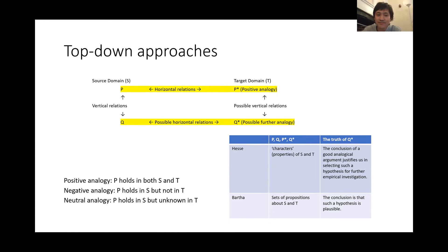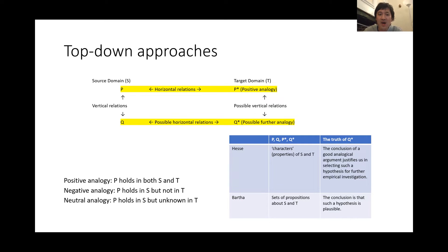There are three important conceptions about analogy that originated from Hesse's work: positive analogy, negative analogy, and neutral analogy. Positive analogy means there are some similarities between two domains S and T — for example, property P holds in both S and T. Negative analogy means some property holds in S but not in T, or vice versa. Neutral analogy means we have some property holding in S but we have no idea whether it holds in T.